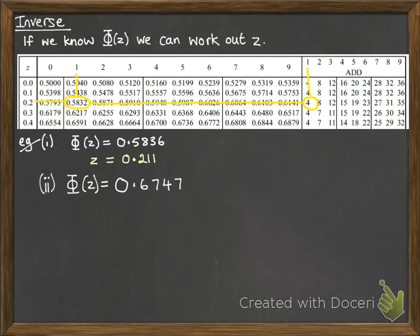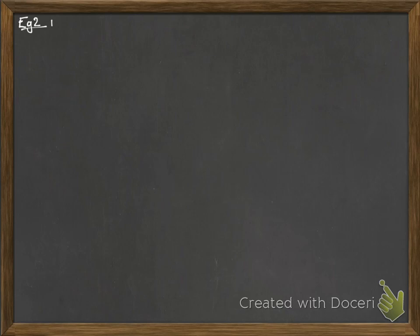Let's do another one. This time φ(z) is 0.6747. We're looking for the largest number that is still less than 0.6747, and that's 0.6736. Now to get that up to 0.6747, we would need to add on 11. So first we've got 0.4 and 5 to make that first part, and we need to add on 11 to make the final part, so we need the 3 that gives us the 11.